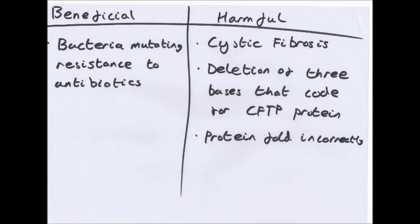We can have harmful mutations. Cystic fibrosis is the deletion of three bases that code for the CFTR protein. The protein folds incorrectly. This causes the protein to be broken down. And this leads to excess mucus production, which affects lungs of cystic fibrosis sufferers. So, that's just some examples. There are many more. Look in your textbook or online.